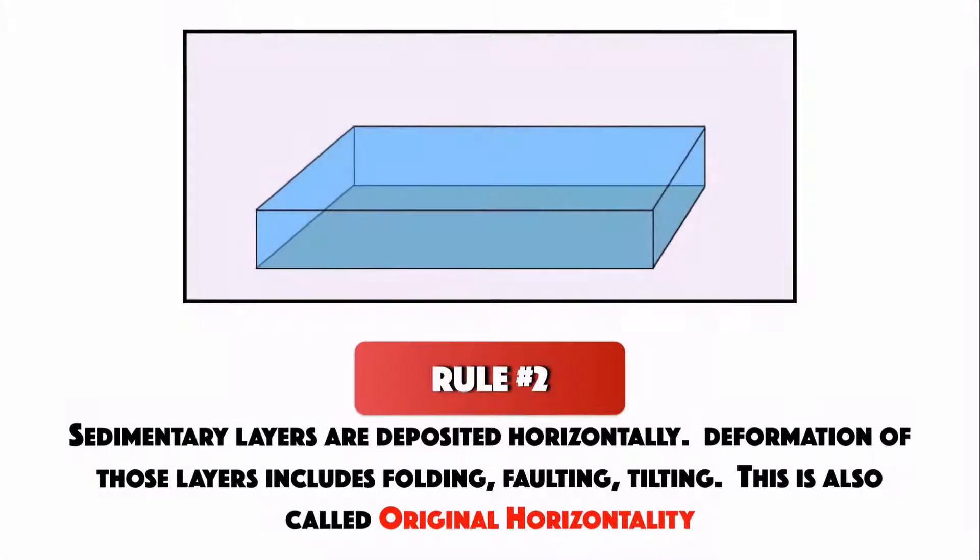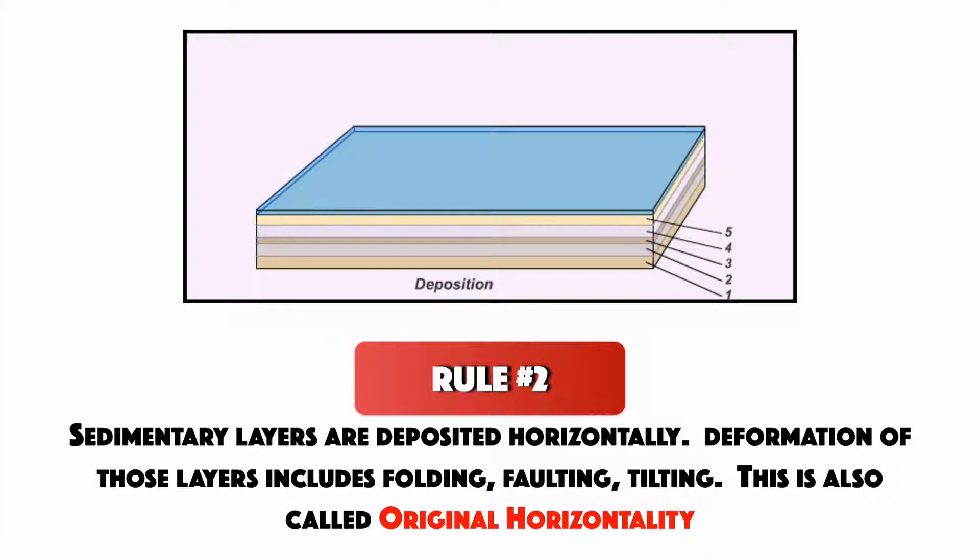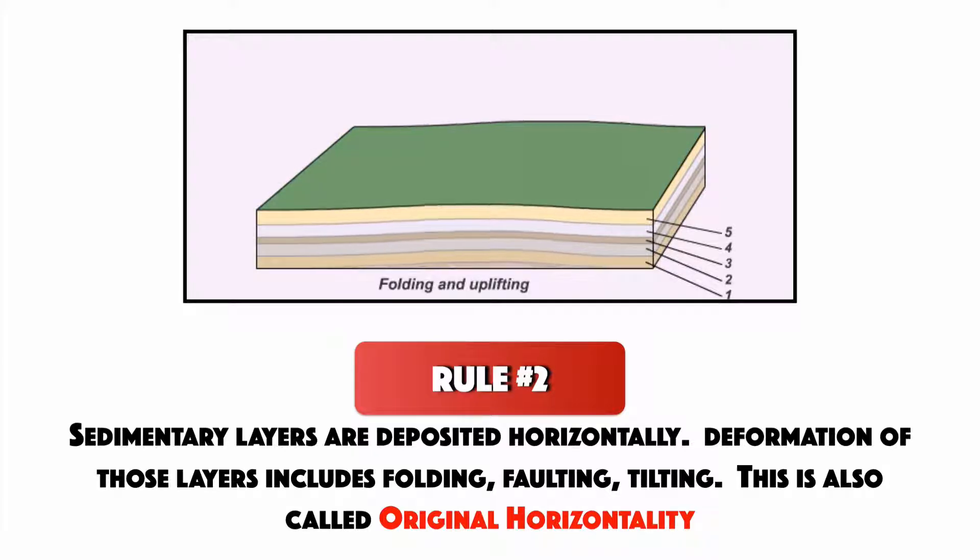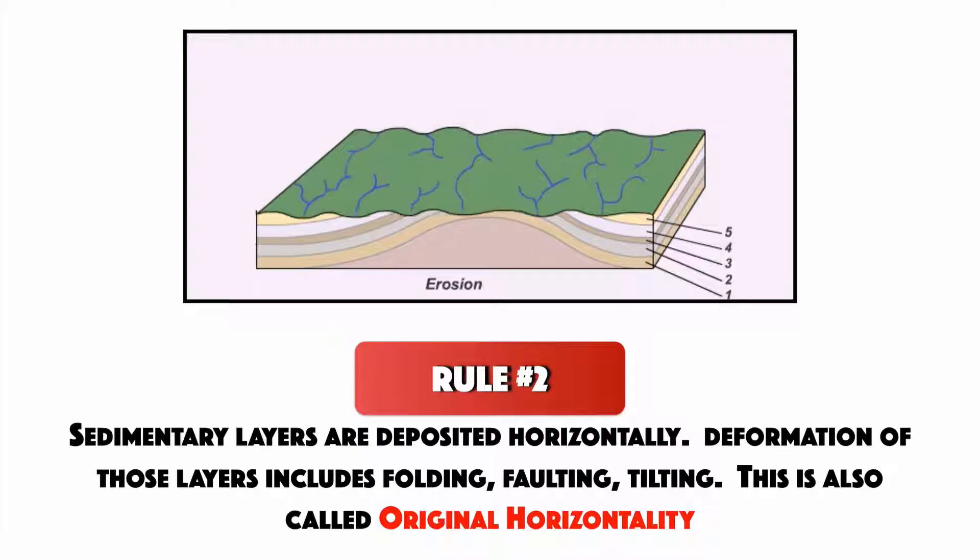So rule number two: sedimentary layers are deposited horizontally, and any deformation of those layers will include folding, faulting, and tilting. So we call this rule original horizontality, and that's stating that everything gets laid down flat. And if it's not flat, it's been folded, faulted, or tilted.